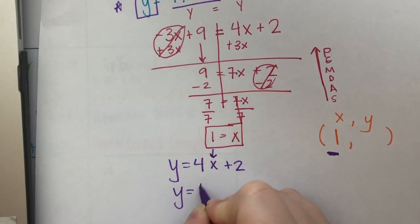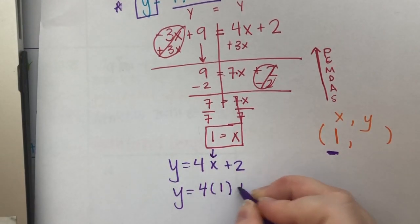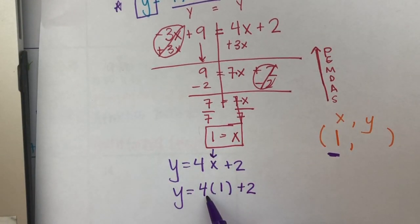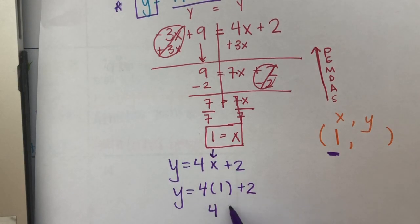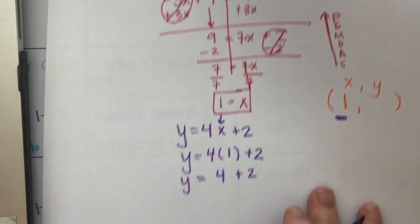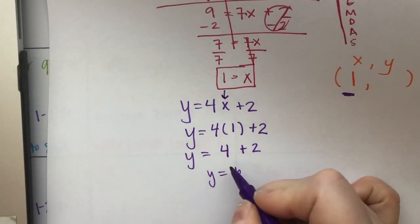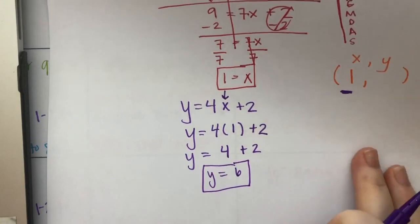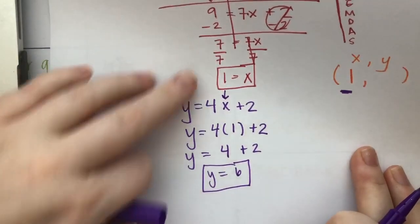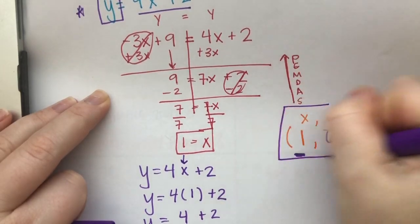So we're going to say y equals 4 parentheses. We're going to put that 1 there plus 2. So 4 times 1 is 4. 4 plus 2 is 6. So we know that y equals 6. So x equals 1, y equals 6. I can put that right here. So my answer is 1 comma 6.